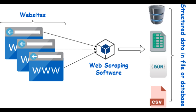urlopen returns an HTTP response object. Initially, use the HTTP response object's dot read method to extract the HTML from the page — that returns a structure of bytes. Then use dot decode to decode the bytes to a string using UTF-8: html_bytes = page.read(), html = html_bytes.decode('UTF-8'). We can then print the HTML to understand the contents of the web page: print(html).